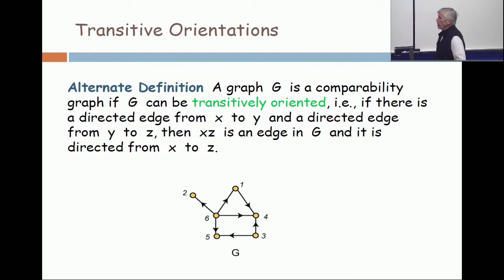So, this orientation is transitive. And clearly, a graph is a comparability graph if and only if you can orient it in this way. This is simply stating the order. So you're saying that in the partial order, I want 6 to be less than 1, I want 1 to be less than 4. Therefore, I want 6 to be less than 4.